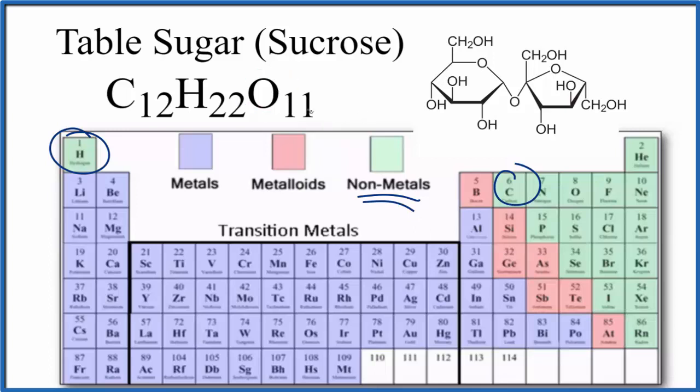And then oxygen here, we have 11 oxygens. Oxygen, that's a nonmetal. When we have all nonmetals, we have what's called a covalent or a molecular compound.